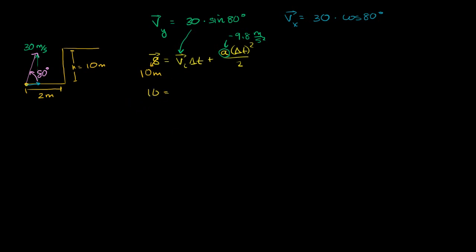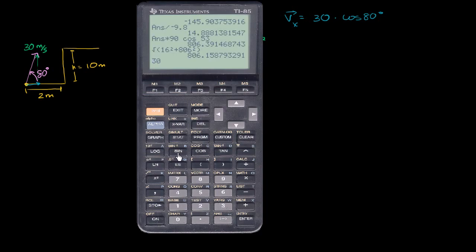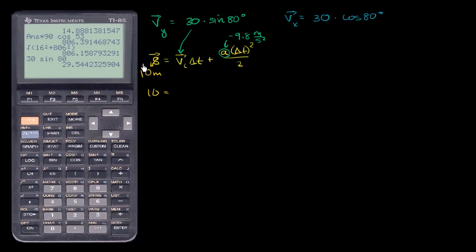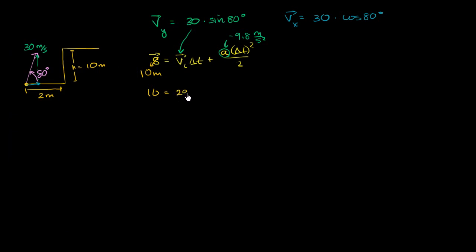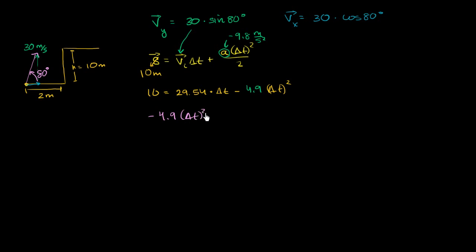It simplifies to: 10 equals 30 times sine of 80 degrees, which gives us 29.54, so 29.54 times our change in time, plus negative 4.9 times delta t squared. We subtract 10 from both sides and write this in traditional quadratic form: negative 4.9 times delta t squared plus 29.54 times delta t minus 10 equals 0. Then we can use the quadratic formula to find the roots.